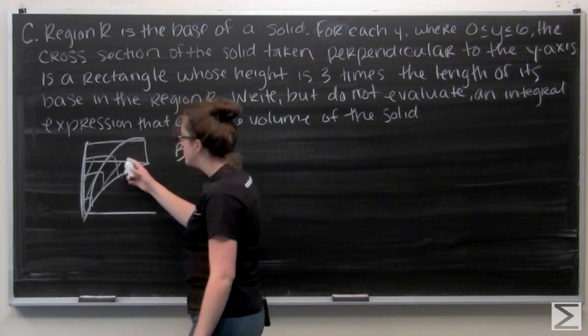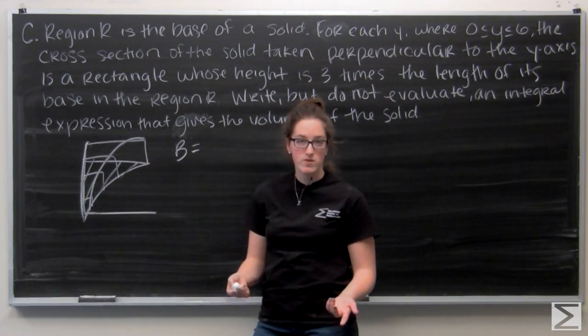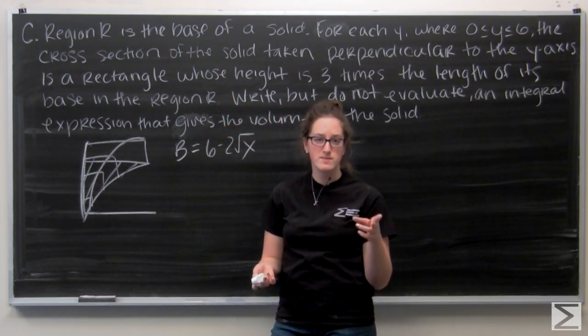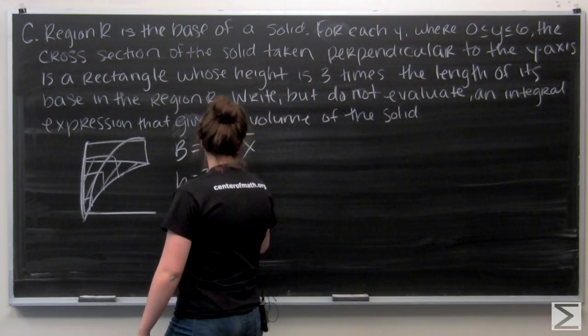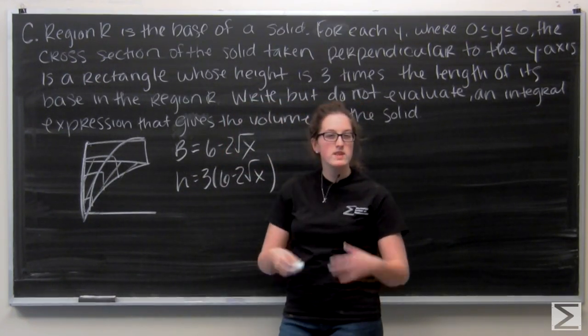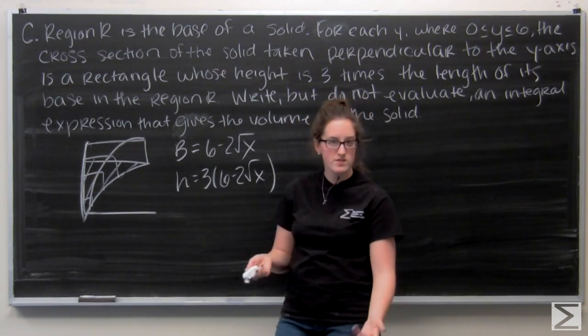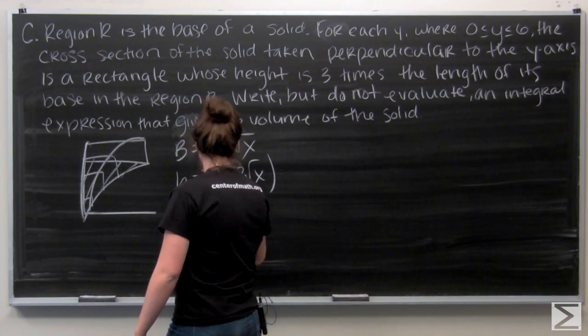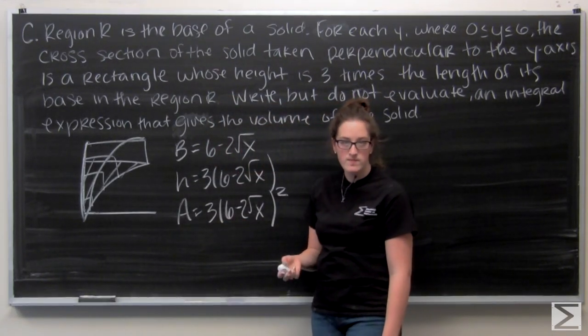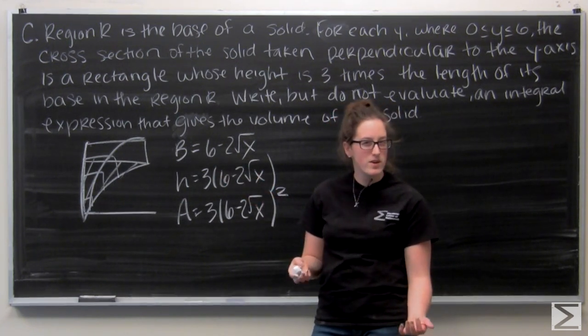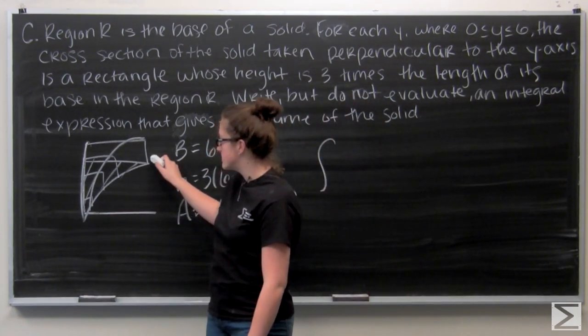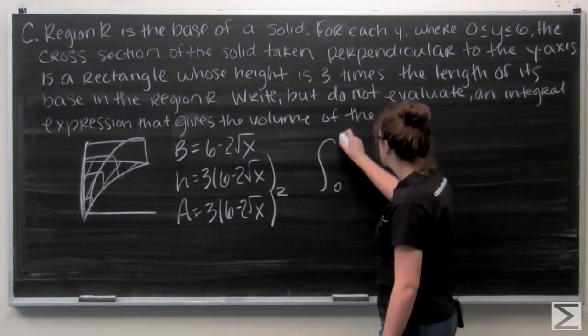We know its base is just going to be the length of the region. So six minus two square roots of X. And I know that the height of the rectangle is going to be three times as large as its base. So three times six minus two square roots of X. So let's think about what the area is now. That's what we're going for, right? Well, the area of a rectangle is just base times height. So three times six minus two square roots of X squared. But since these are perpendicular to the Y axis, I want to integrate with respect to Y instead of X. I know it's a little funny. Let's look at our bounds. We know that this is the line Y equals six. So we're going from zero to six.